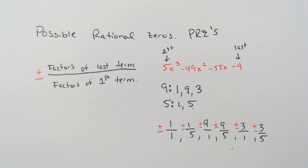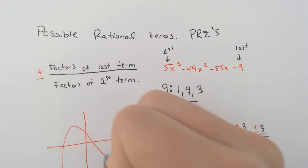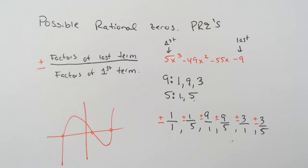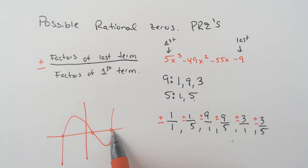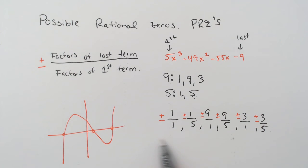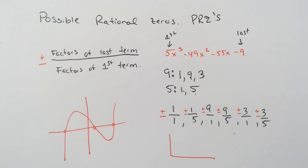If you had to find the actual zeros, that's where this holds real value. If you have a graphing calculator, you could graph this and identify your three zeros directly. But if you don't have a graphing calculator, or if some zeros are decimals like a square root of 5 over 5, you would never know. So you use these possibilities to do your synthetic division, and they help narrow it down so you're not completely guessing and checking over and over again.